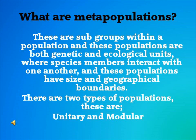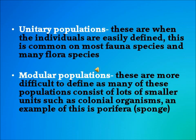There are two types of populations: unitary and modular. Unitary populations are when the individuals are easily defined. This is common in most fauna species and many flora species, whereas modular populations are more difficult to define as many of these populations consist of lots of smaller units such as colonial organisms.